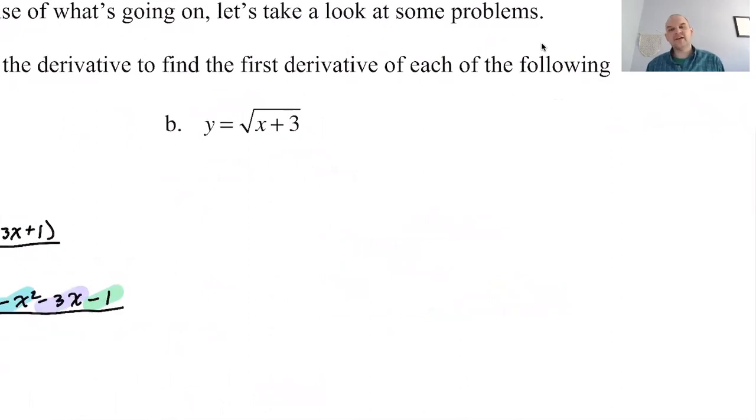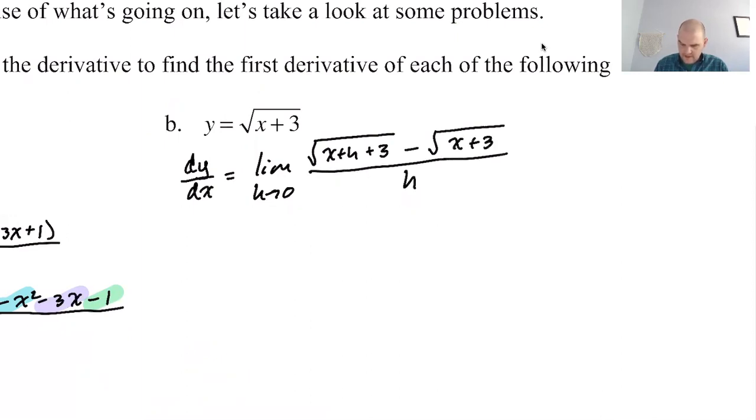All right, so same process, except since this is called y, I have a choice. I could call it y prime, or I could call it dy/dx. I'm going to go with dy/dx just to get that going. Like, you're going to use that notation a lot. So why not on day one? All right, it's going to be the limit as h approaches 0 of f of x plus h minus f of x over h. The function's not named f of x, so I'm just going to dive in and do it. So every x that I see becomes √(x+h+3) minus the original function, which is just √(x+3), divided by h.